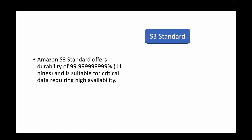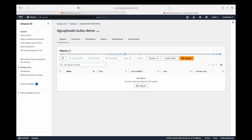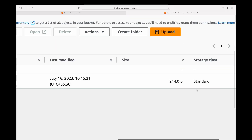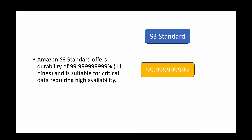For this, we can make use of S3 Standard, which is the default. Whenever we create an S3 bucket and upload data, it gets stored in Standard by default. Amazon S3 Standard offers durability of 99.999999999% — which is 11 nines — and is suitable for storing critical data that requires high availability.